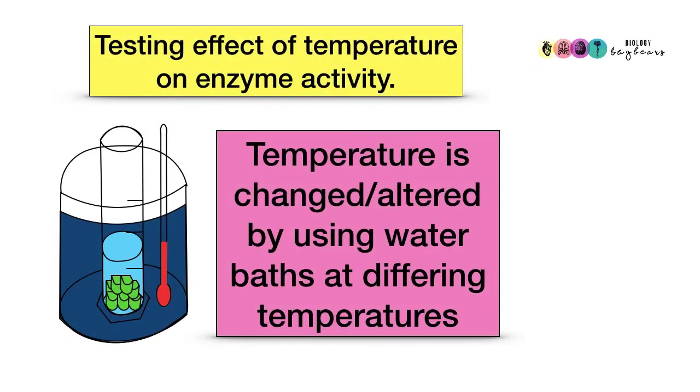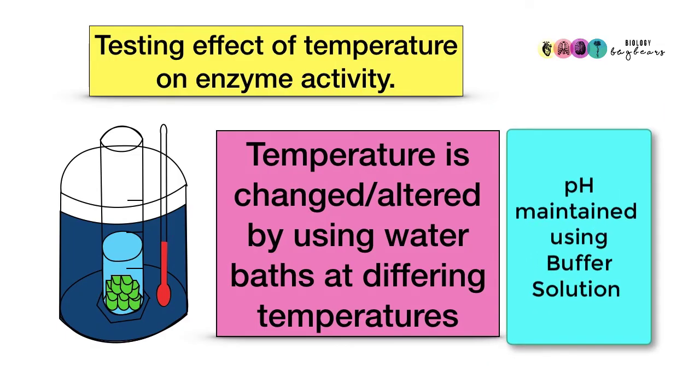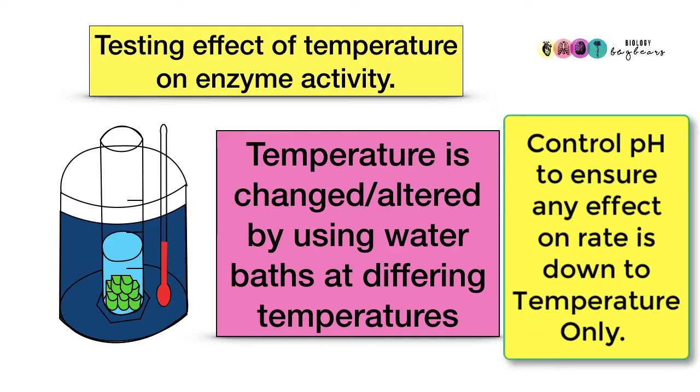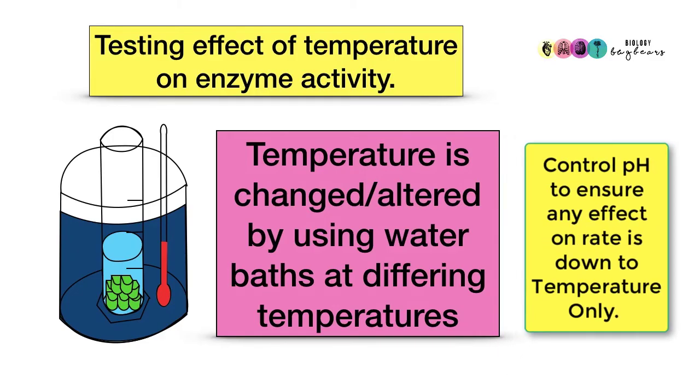This practical was looking at the effect of temperature on enzyme activity. A question that's often asked is how did you alter temperature? Well, you altered it by using water baths set at different temperatures, and you checked each of these using thermometers. Another question which often is asked is why did you maintain pH and how did you do it? pH is always maintained in this practical at 9 by using a buffer solution. The reason why you want to maintain pH is because you want to prove that any effect on the rate of reaction is solely down to the changing temperatures.